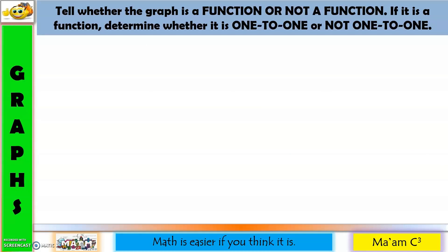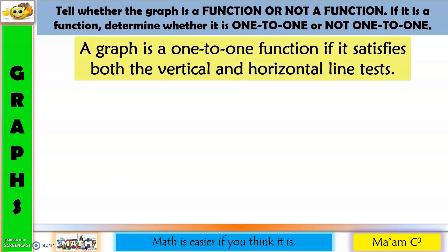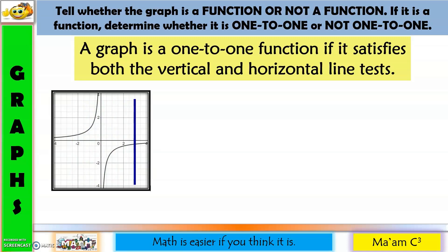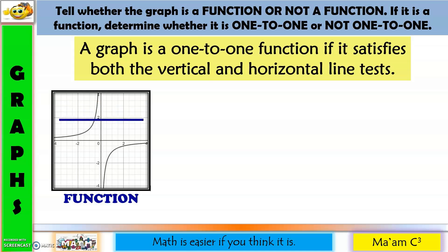Now, let us have graphs. Here is a simple rule: a graph is a one-to-one function if it satisfies both the vertical and horizontal line test. Let's have an example. We are going to use the vertical line test first. A graph is a function if one vertical line drawn anywhere intersects the graph at exactly one point. As the vertical line moves going to the right, it intersects any part of the graph at exactly one point. Therefore, this is a function. Now let's have the horizontal line test — any part of the graph intersects the horizontal line just once. Therefore, this is a one-to-one function.